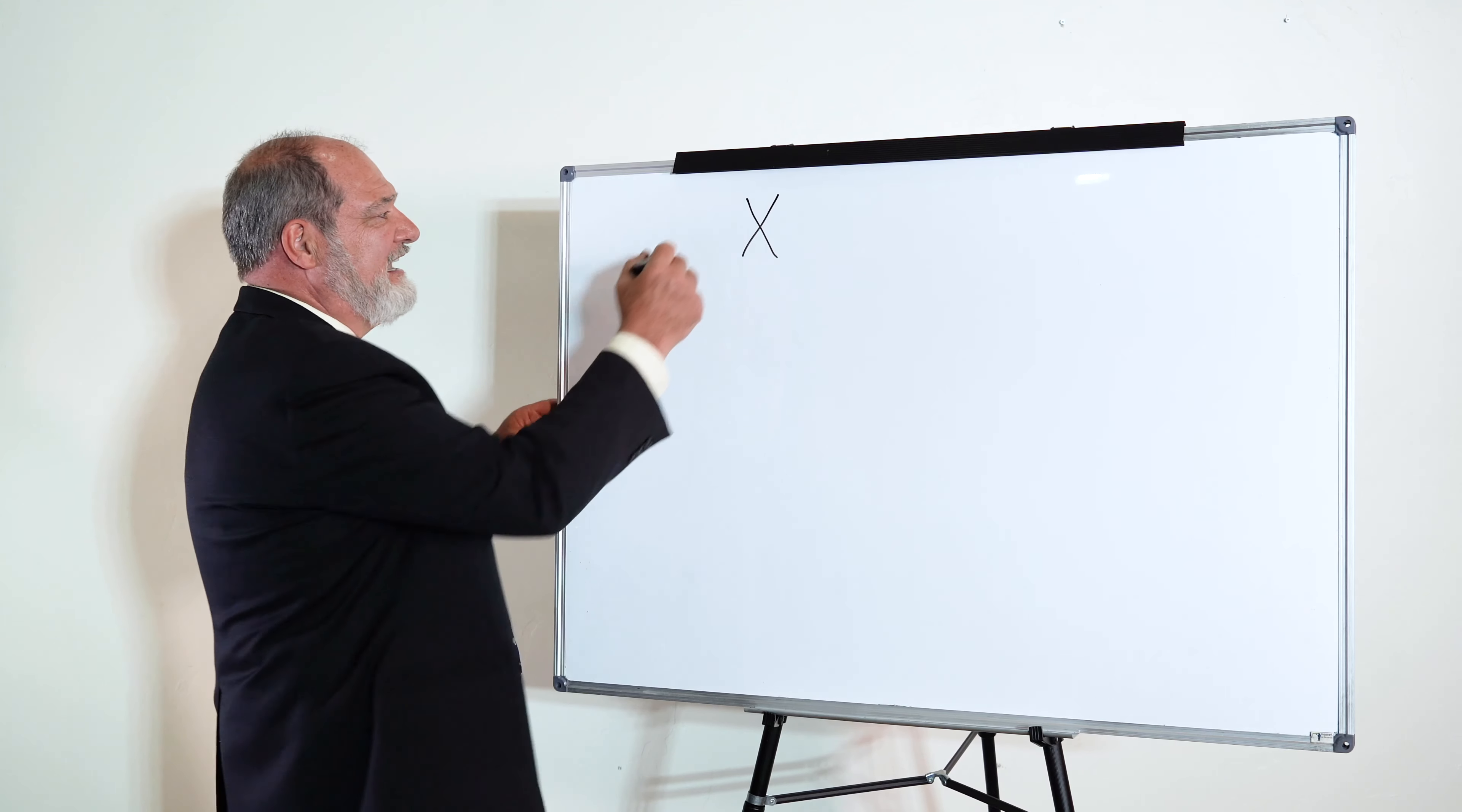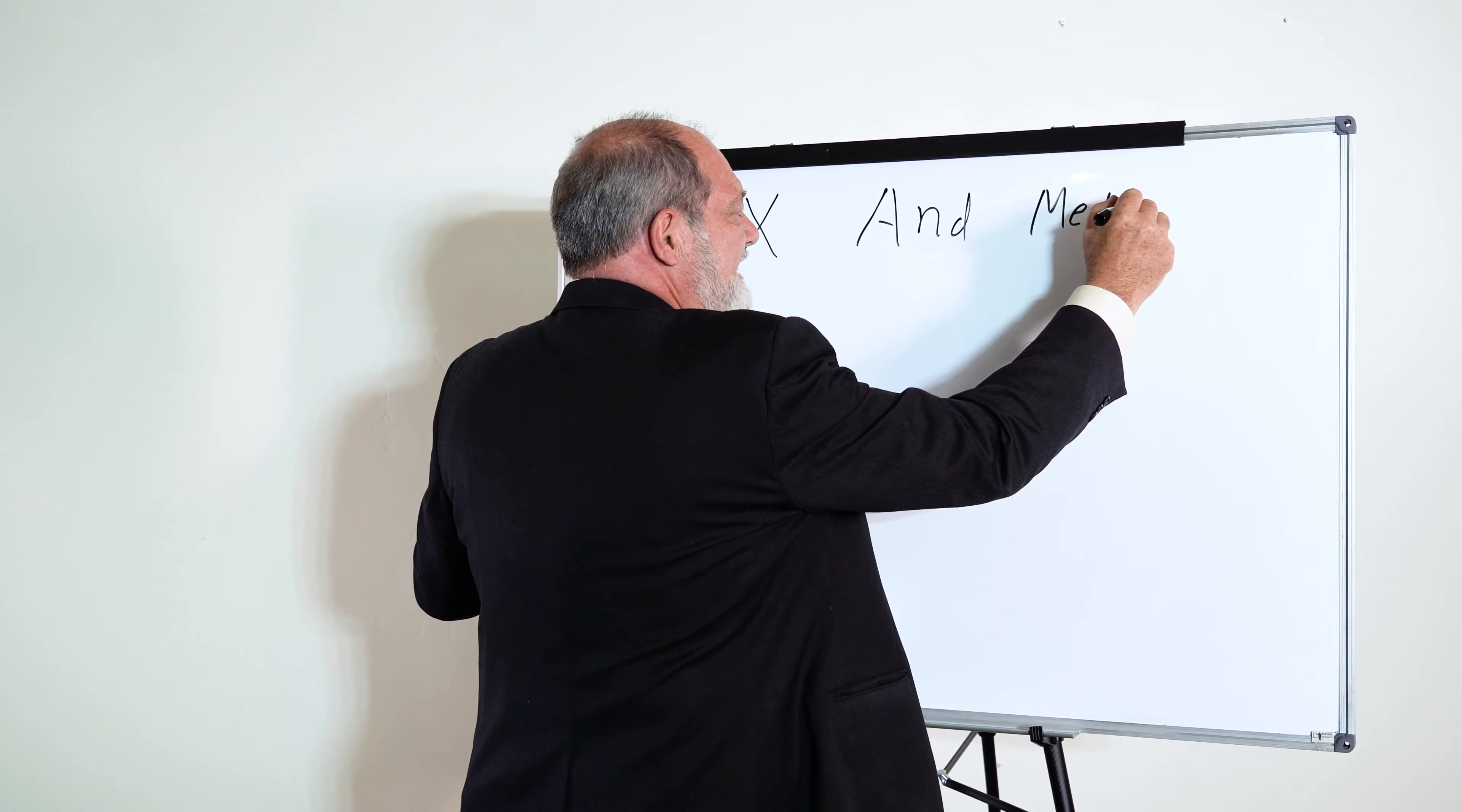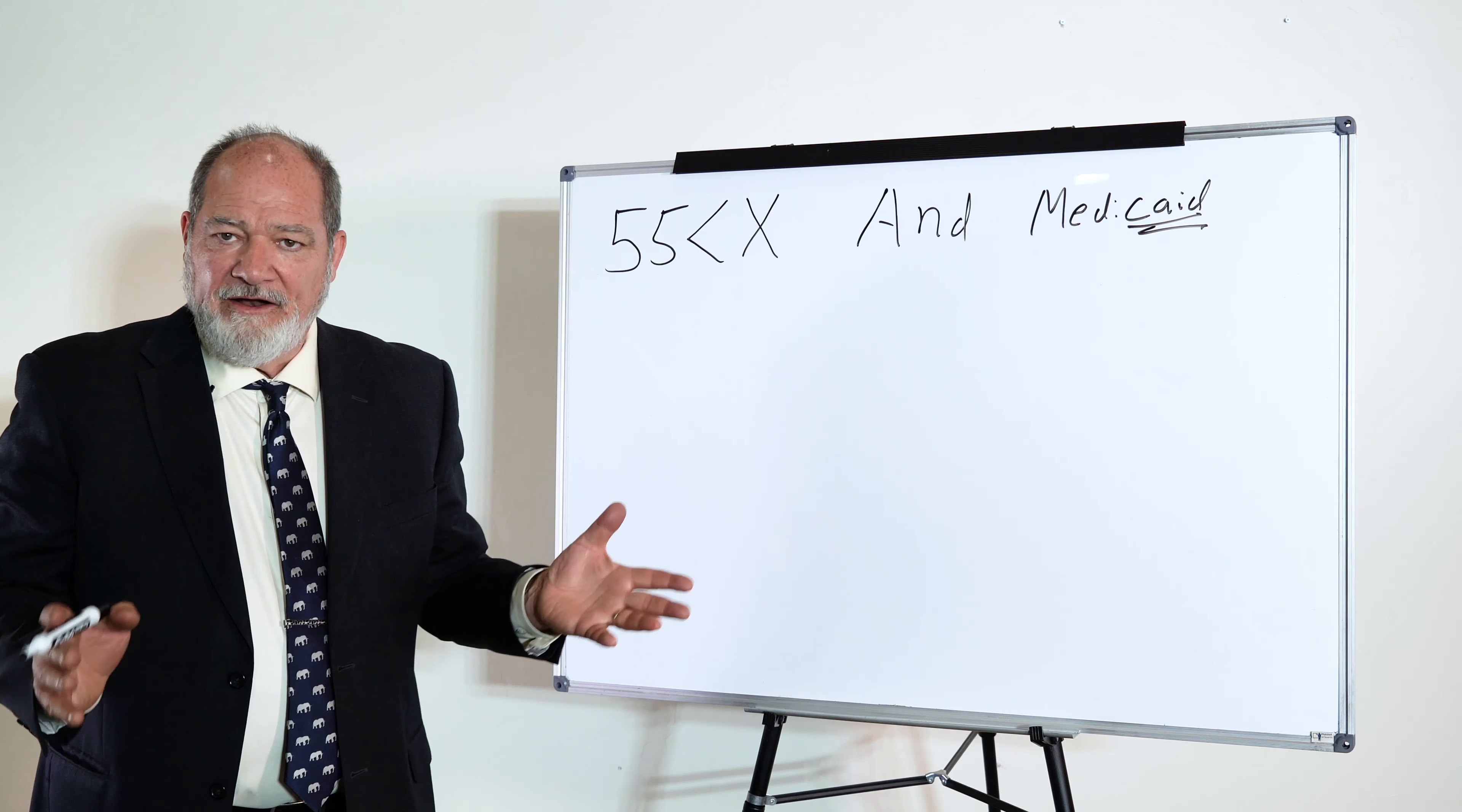So the first thing we need to look at is how old are you? This is you, X. If you are over 55 years of age and you get Medicaid, not Medicare, I want to stress that, Medicaid, then any benefits you receive from Medicaid after the age of 55, or in California Medi-Cal, are subject to estate recovery.